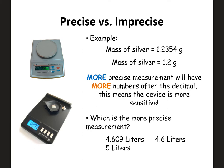Anytime you have more numbers after the decimal point, that's a more precise measurement with a more sensitive instrument. Looking at two masses of silver, the one with more decimal places is more precise. For example, 1.2354 grams is much more precise than 1.2 grams. Generally, the more decimal places on a balance, the more expensive that electronic balance is. Looking at three measurements at the bottom, the most precise is 4.609 liters, because it has the most numbers after the decimal point.